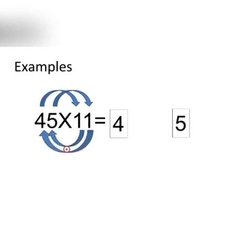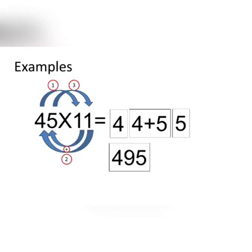Now, cross multiply the numbers and add together to get the center number. So, the final product is 495.